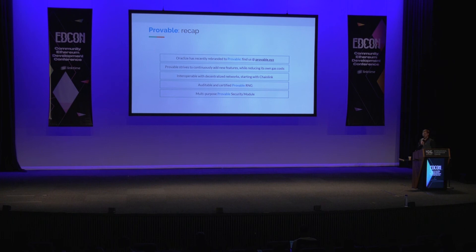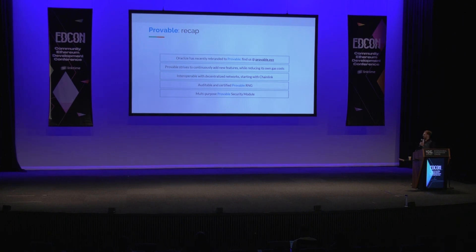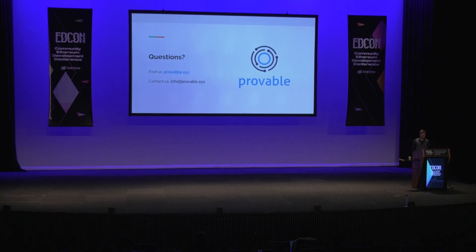Just to recap: we have rebranded from Oracleize to Provable, and provable.xyz is our new website. We are adding new features while reducing gas costs, which is important to make the Oracle sustainable in the long run. For decentralization, we are relying on external protocols — Chainlink is the first one we are going to integrate with. The provable random number generator is going to be available shortly also on Intel SGX, in addition to the Ledger Nano S, giving you a certified and secure random number generator for your gambling DApp. The provable security module can be used to secure any application in need of a multi-TEE setup. Thank you for your attention.